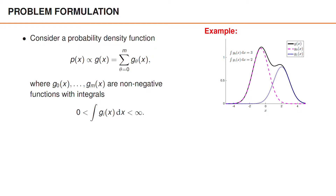The tricks that we present in this video are useful in various different contexts. In particular, you may recall the general idea of using the law of total probability to introduce variables that can help us express a distribution more easily. In many cases, that technique gives us a posterior density written as a sum over unnormalized functions, and we can then use tricks from this video to obtain a nice expression for the posterior.